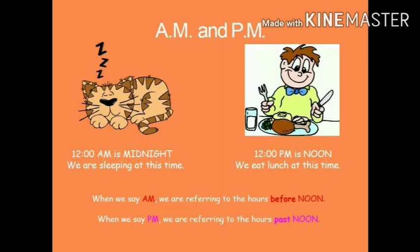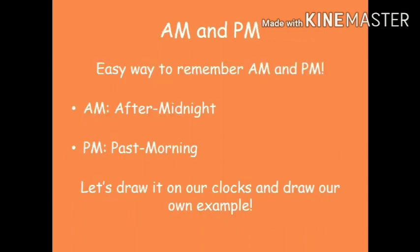Now, what is a.m. and p.m.? 12 a.m. is midnight, and we are sleeping at this time because it is the middle of the night. 12 p.m. is noon, and we are eating lunch at this time because it is the middle of the day. When we say a.m. we are referring to the hours before noon — it means we are talking about the morning. When we say p.m. we are referring to the hours past noon, that is afternoon.